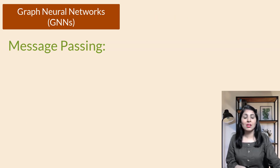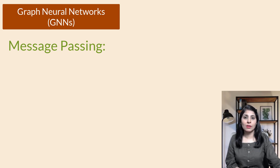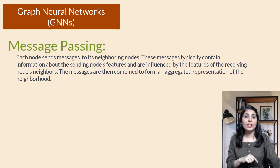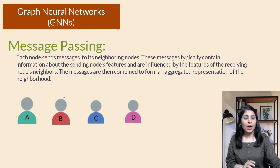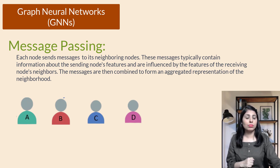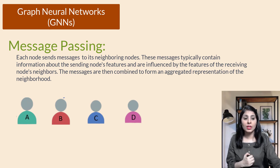Now let's understand message passing, a very important concept in GNNs. Message passing refers to the process by which nodes in a graph exchange information with their neighboring nodes in order to update their own information. Let's consider a scenario where you and your friends are planning a trip and need to decide on a destination, using message passing to gather everyone's preferences and make a collective decision.